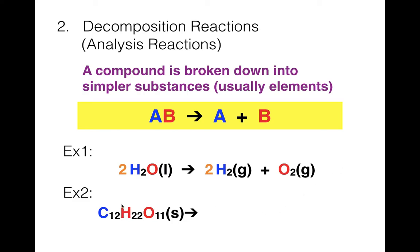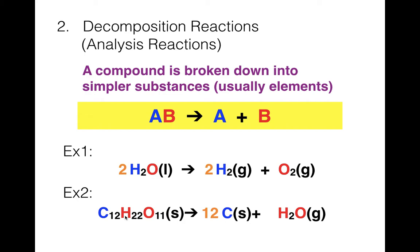The second decomposition example is more complex: sucrose, C12H22O11, which is table sugar. This one doesn't break down into its elements — just simpler substances: carbon and water vapor. To balance: 12 carbons, so put 12 in front of C. For hydrogens, 22 H here with 2 per H2O means 11 in front of H2O. That gives 11 oxygens on the product side, which matches the 11 in sucrose.